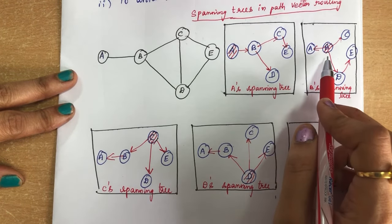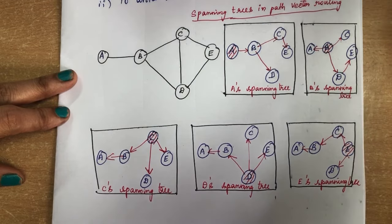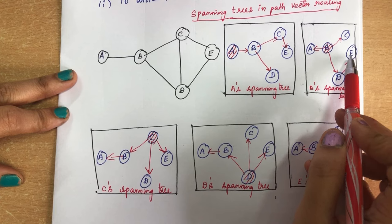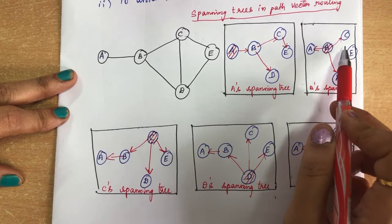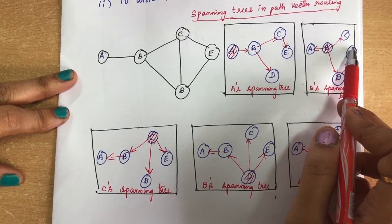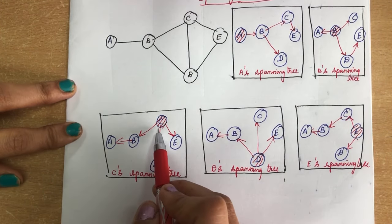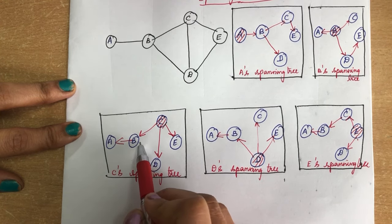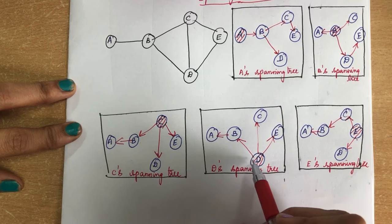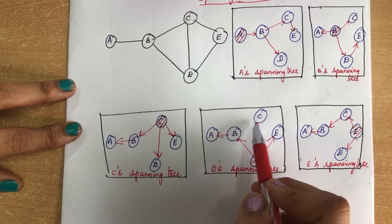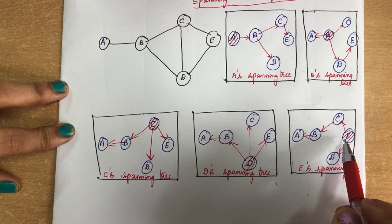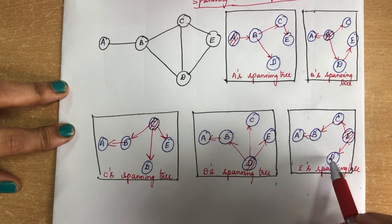Similarly, for B's spanning tree, it can reach all other nodes, but for reaching E it passes through D instead of going through the C route. For C's spanning tree, it avoids the route communication between B and D, as well as D and E. For D's spanning tree, it avoids the communication between C and B, as well as C and E. For E's spanning tree, it avoids the route between D and B.